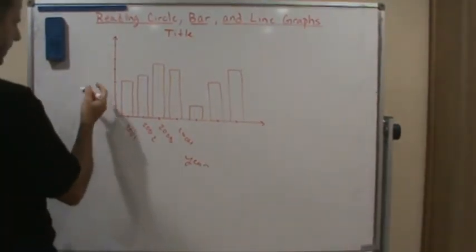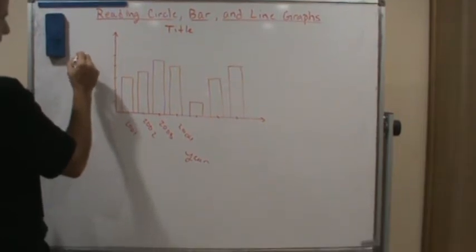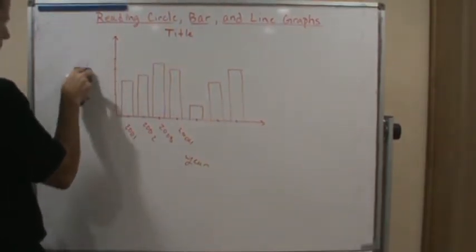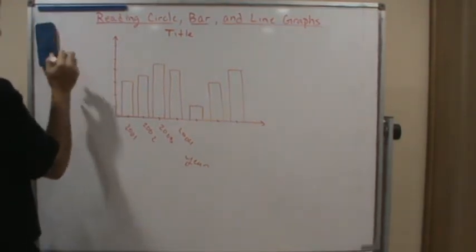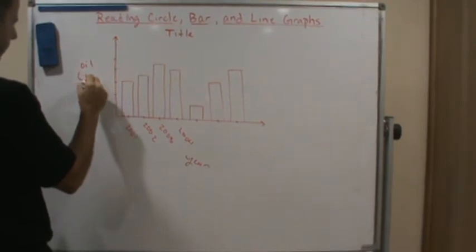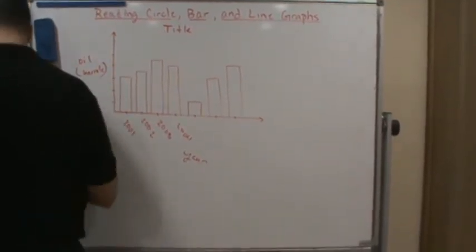And we could label this axis, let's say, oil. And let's say barrels. For example. So barrels of oil.